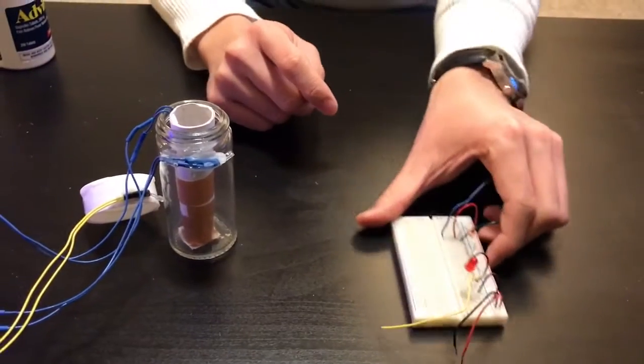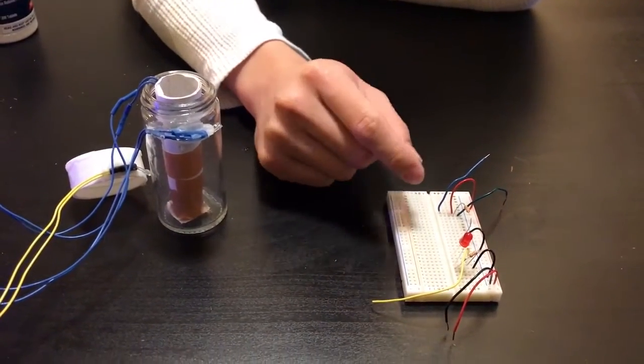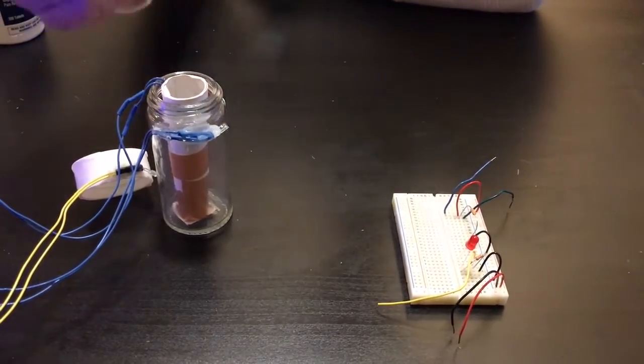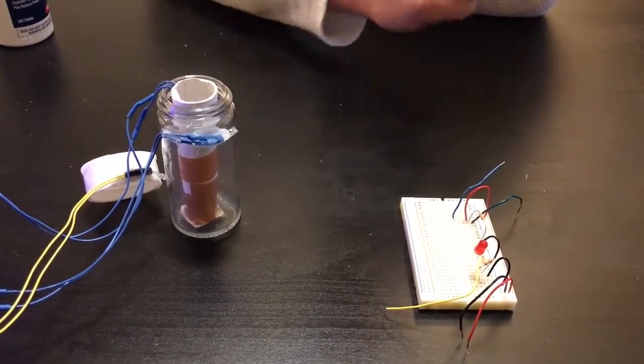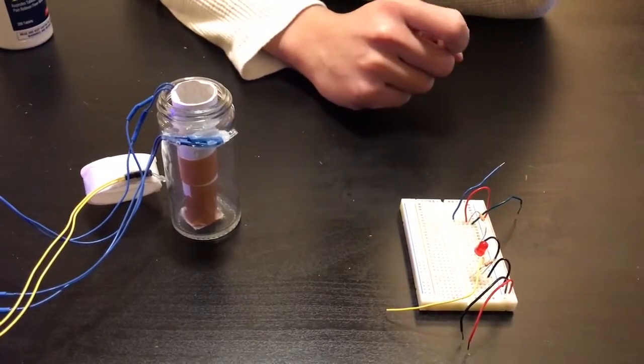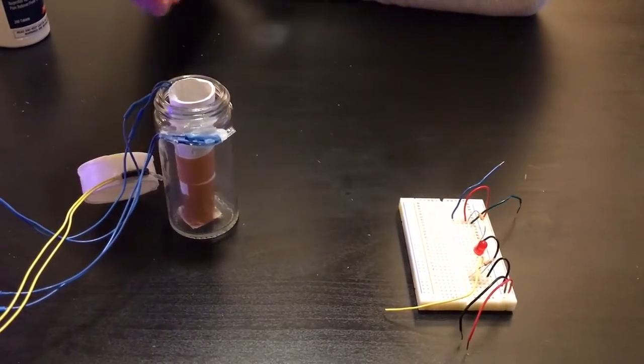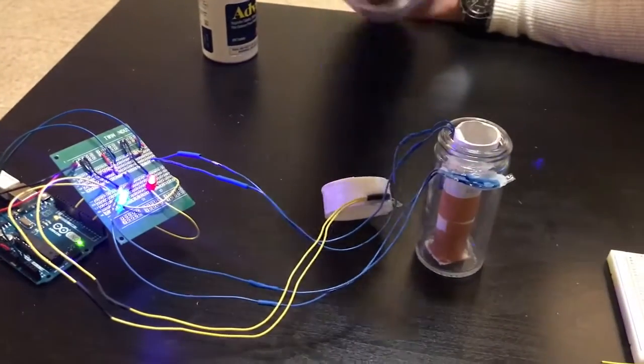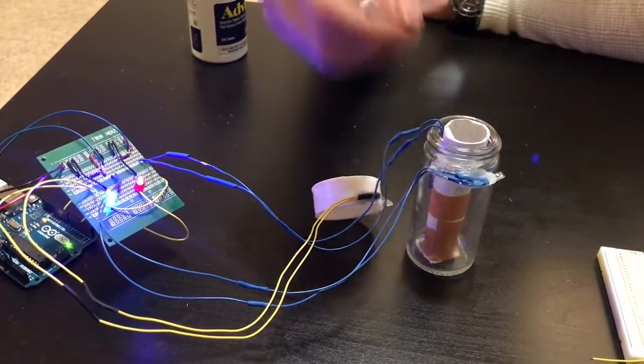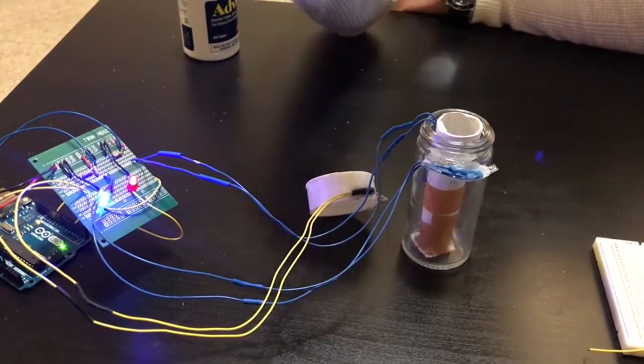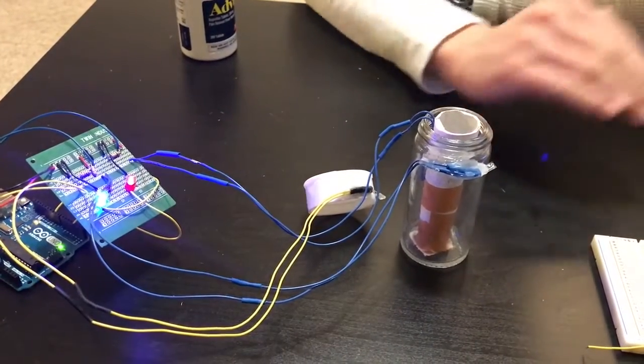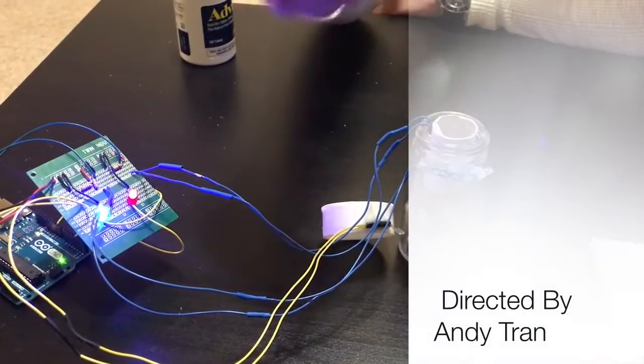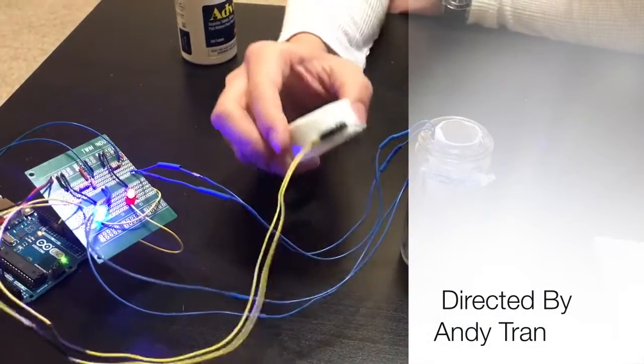For our second component the pressure sensitive resistor we also mapped the pressure sensor weight values onto analog values from 0 to 1023. Each time we put a weight in we empirically tested the analog weight value change that each pill has caused and we set the appropriate threshold so that whenever we put a new weight in we're able to detect how many pills are in the bottle.